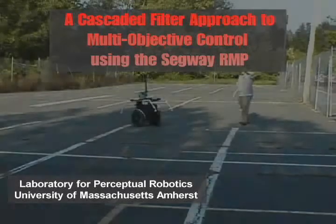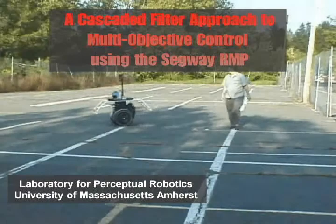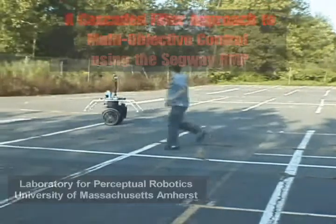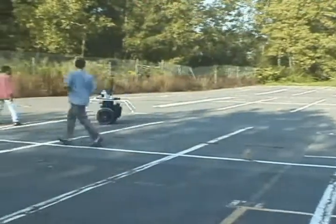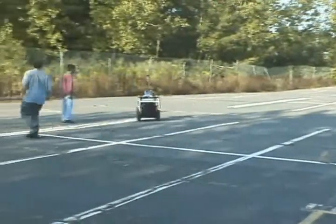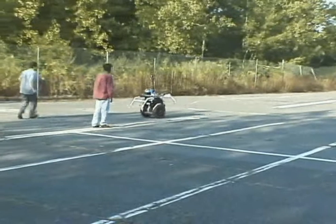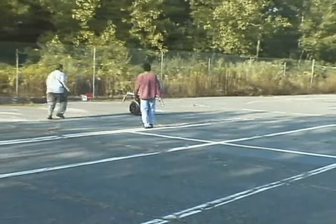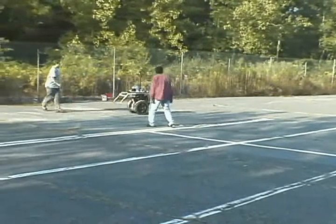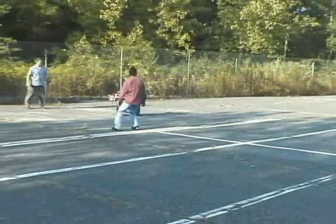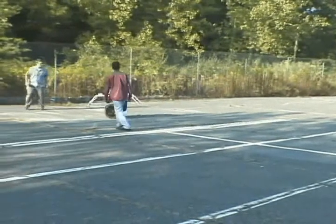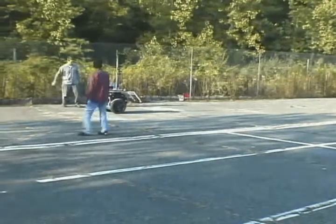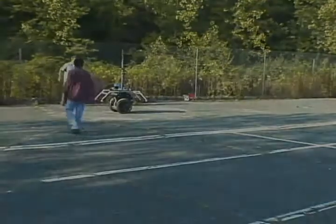The Segway Robotic Mobility Platform, or RMP, is a dynamically stable, differential-drive mobile platform capable of speeds up to 12 km per hour. The platform is equipped with a laser rangefinder and a forward-facing fixed camera. The white frame attached to the platform provides a safety mechanism should the platform tip over.